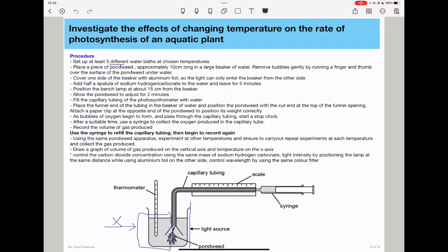You need to fill the capillary tubing of the photosynthometer with water. Then place the funnel end of the tubing in a beaker of water and position the pondweed with a cut end at the top of the funnel opening. Attach a paper clip at the opposite end of the pondweed to position its weight correctly. This ensures that the pondweed is in the right position and doesn't change position in the whole experiment.